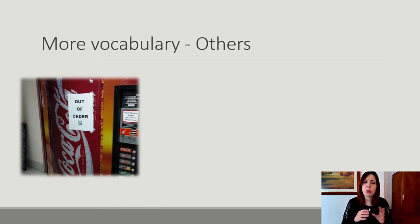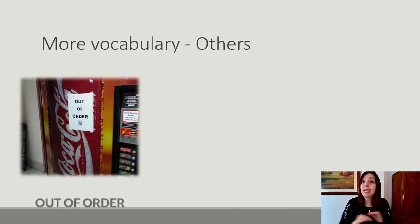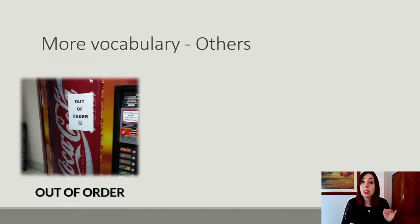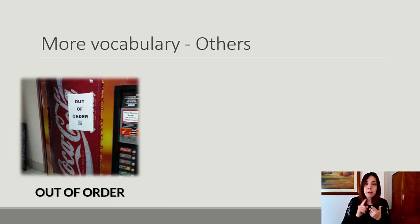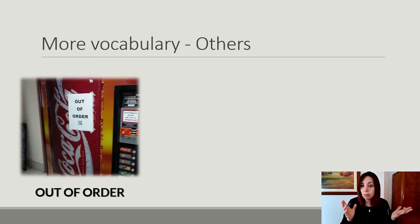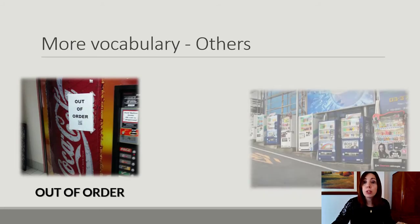Out of order. What is the problem with this vending machine? It's out of order — it doesn't work. You can use it for machines, for cars, for ATMs at the bank. You can use it for different kinds of machines. Out of order.